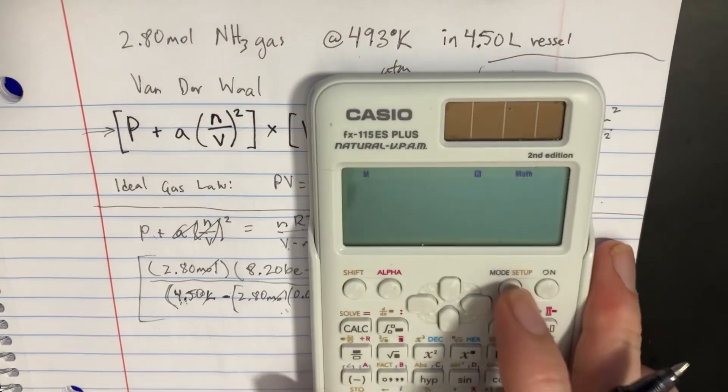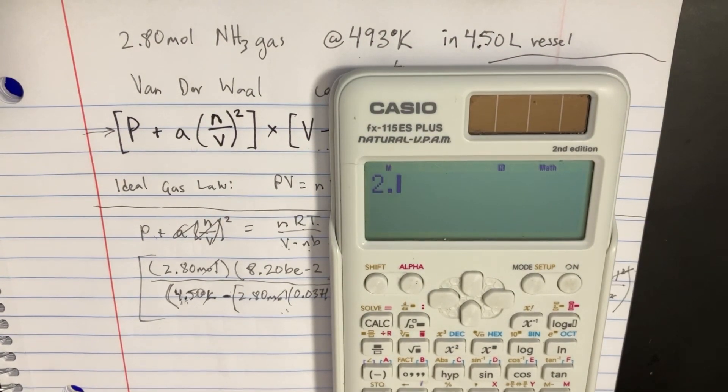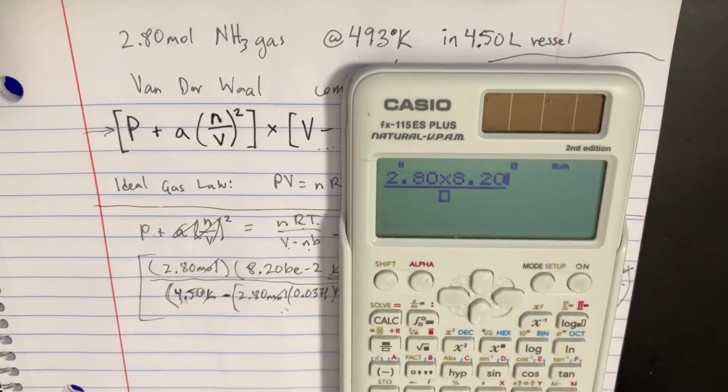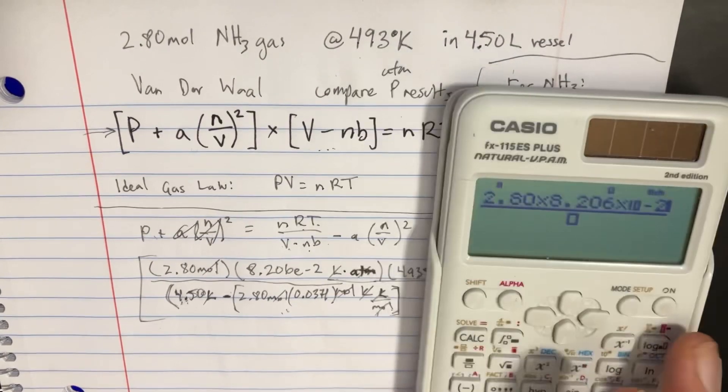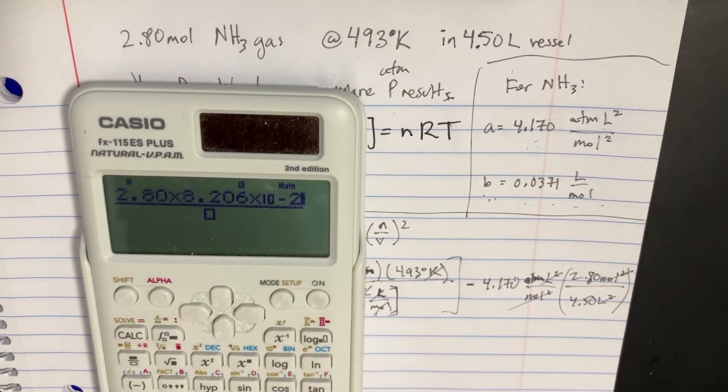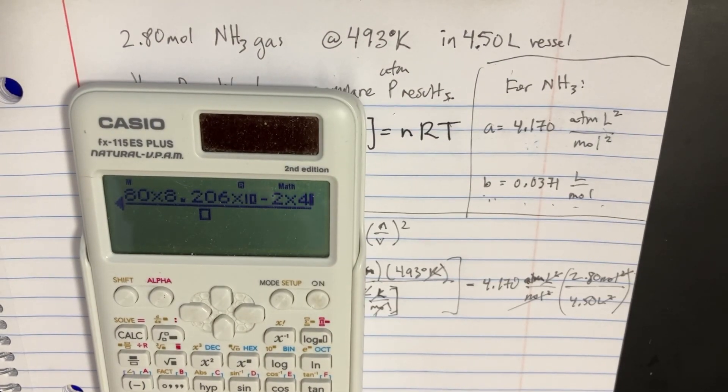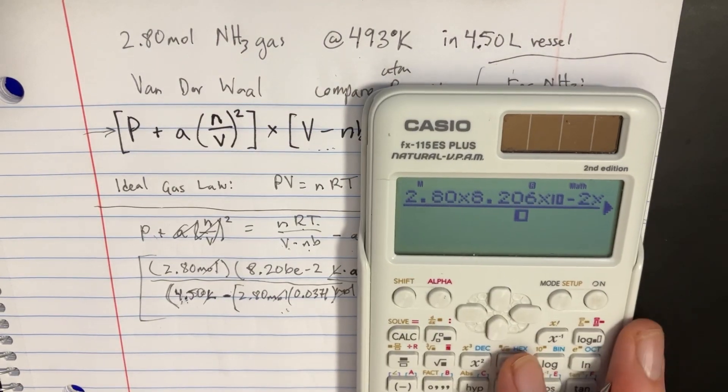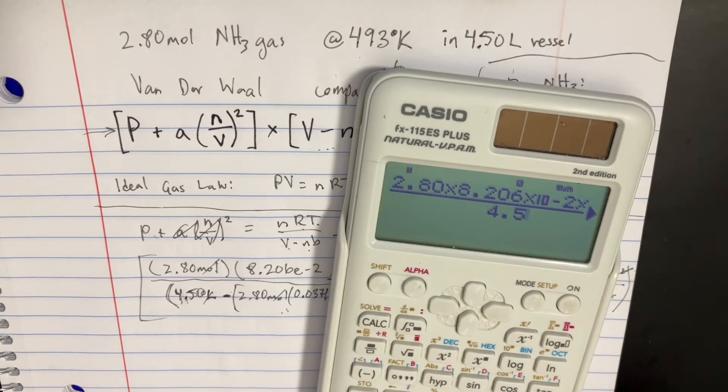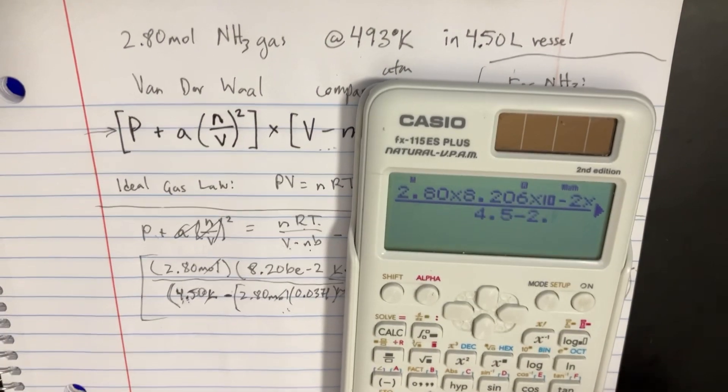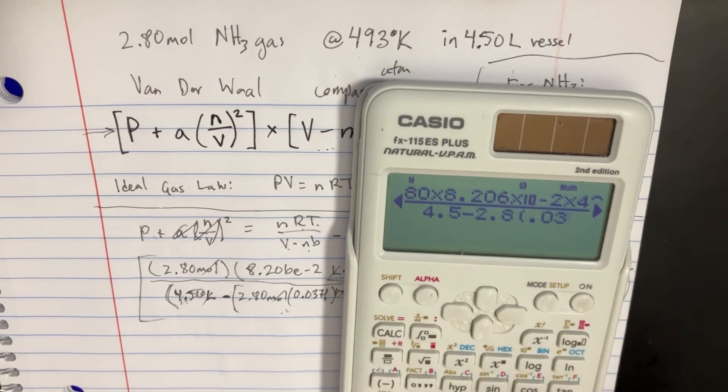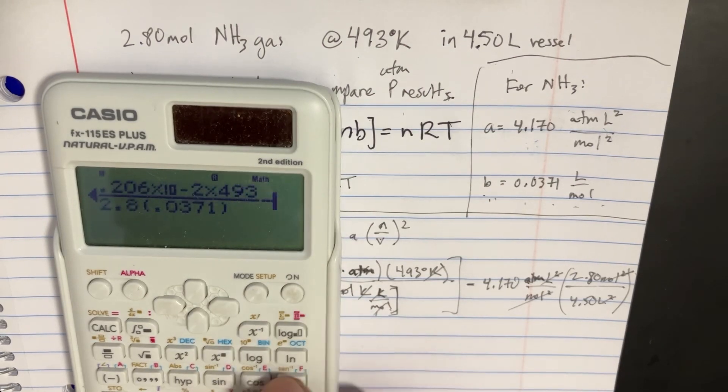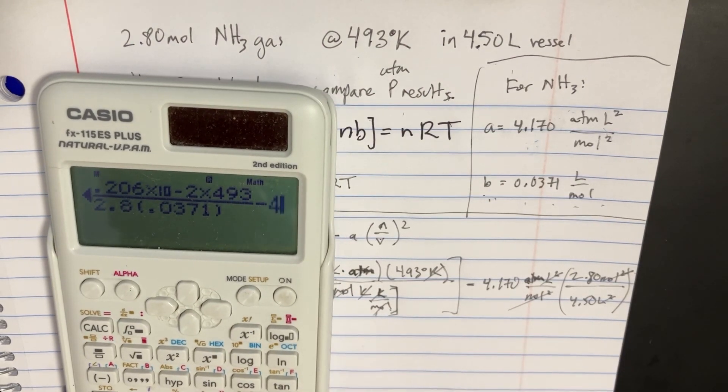So let's just plug this into the calculator and see what happens. We're going to get 2.80, and then on the top we're going to have 8.206 times 10 to the negative 2, and there's still a 493. And then on the bottom side, there is 4.5 minus 2.8 times 0.0371. And then we can just basically subtract this stuff over here, 4.17.